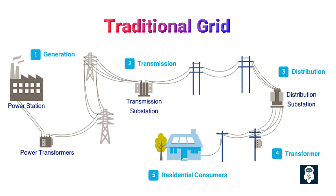These grids rely on manual operation and maintenance, which are time-consuming and costly. Technicians must visit sites to operate switchgear or other equipment, resulting in delays in resolving problems. When faults occur, the lack of real-time data and limited communication can cause significant delays in pinpointing their precise location, resulting in extended restoration times and leaving consumers without power for longer periods.